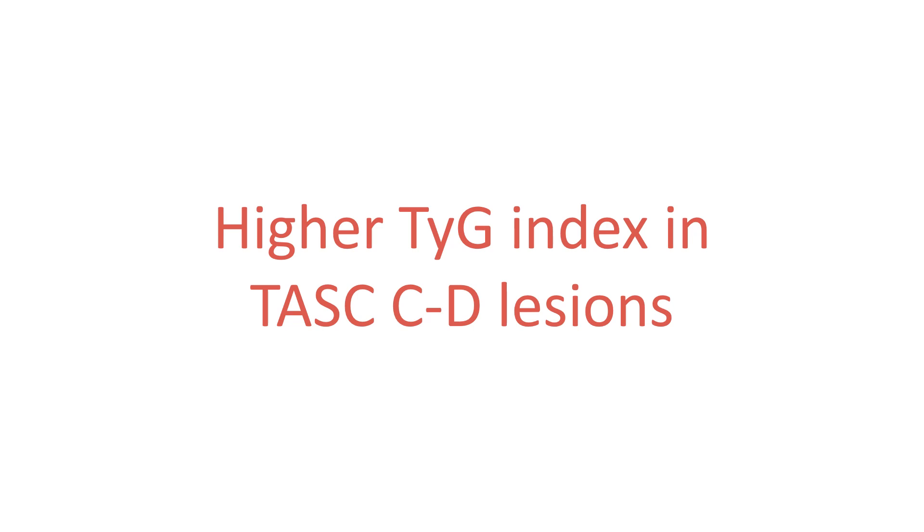Triglyceride glucose index has been shown to predict the complexity of peripheral artery disease. 71 patients with PAD who underwent percutaneous peripheral intervention were analyzed retrospectively; 93% were males and mean age was 63.3 years. Severity and complexity of PAD was assessed by Transatlantic Inter-Society Consensus II classification. Those with TASC A-B lesions were included in Group 1 and those with TASC C-D lesions in Group 2. Platelet count and TyG index were significantly higher in Group 2, and TyG index was significantly correlated with TASC 2, Rutherford category, HbA1c, and HDL-C. Findings from the ARIC study also showed that higher TyG index is independently associated with an increased risk of incident PAD.